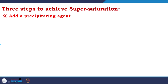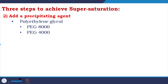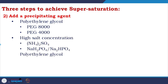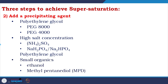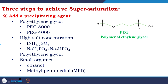The second step is to add a precipitating agent. Polyethylene glycol (PEG) is very useful in crystallization. High salt concentrations — ammonium sulfate, sodium phosphate, sodium biphosphate — and small organics like ethanol and MPD (methyl pentanediol) are common agents. PEG polymers such as PEG 8000 and PEG 4000 are named according to molecular weight.